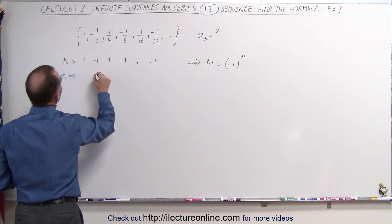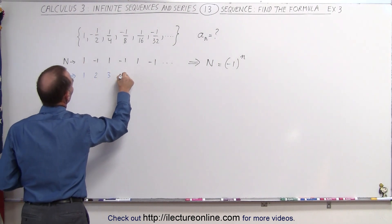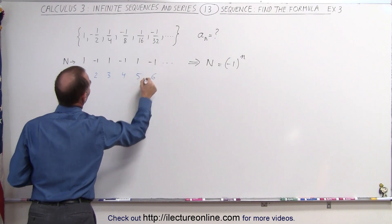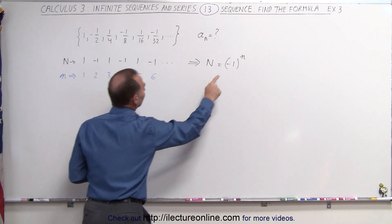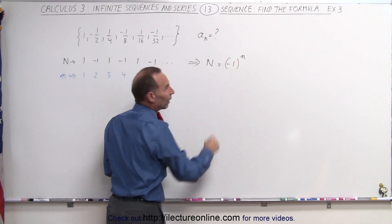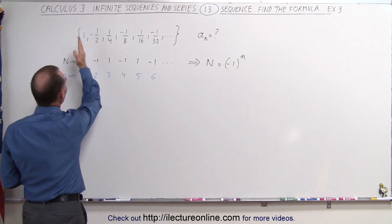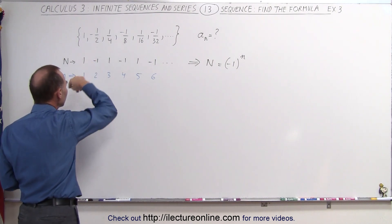So we have one, two, three, four, five, six. So here we can see that if n is equal to one, a negative one to one gives us a negative one. Hmm, and we have a positive one there. So they're not really in sequence.